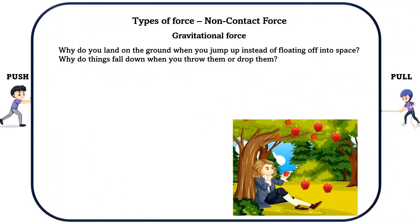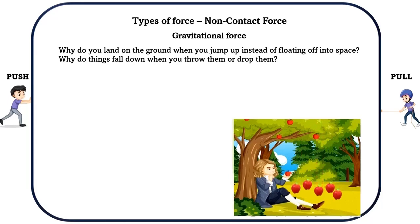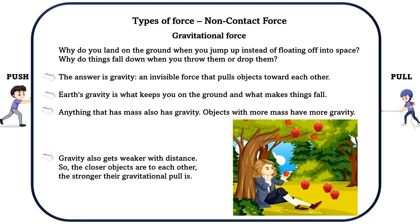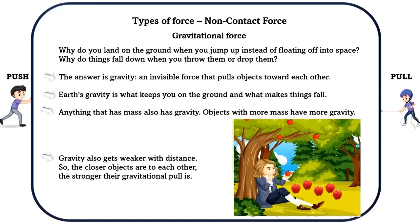Gravitational force. Why do you land on the ground when you jump up instead of floating off into space? Why do things fall down when you throw them up or drop them? The answer is gravity — an invisible force that pulls objects towards each other. Earth's gravity is what keeps you on the ground and what makes things fall. Anything that has mass also has gravity. Objects with more mass have more gravity.